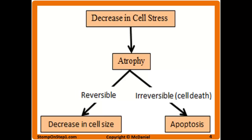Here's the flow chart for atrophy. A decrease in cell stress leads to atrophy, which can be reversible — a decrease in cell size — or irreversible — apoptosis or cell death. Given the situation, you actually want cell death because providing those cells with nutrients and energy is an unnecessary expenditure if you no longer need them due to decreased cell stress.